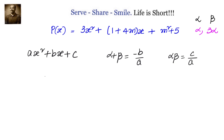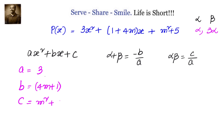Here alpha is alpha and beta is 3 alpha. The values of a, b, c are: a equals 3, b equals 4m plus 1, and c equals m² plus 5. The sum alpha plus beta is alpha plus 3 alpha, which is 4 alpha. The product alpha into beta is alpha into 3 alpha, which is 3 alpha².